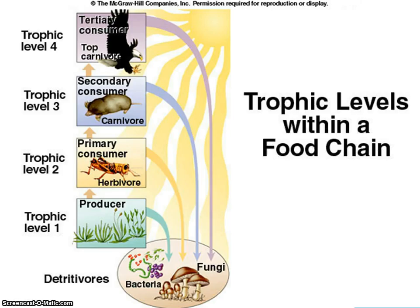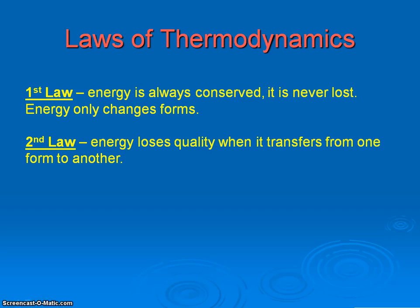Here's another picture that shows the different levels and examples of organisms found in those four different levels. As far as energy goes, we know that energy is always conserved — it's never lost, never created or destroyed. It's just changed from one form to another. That's the laws of thermodynamics.